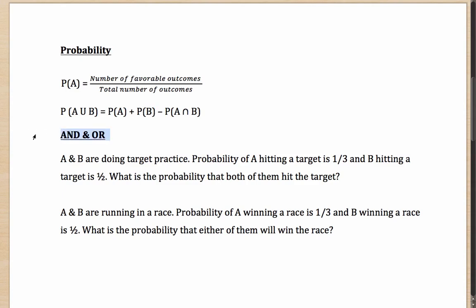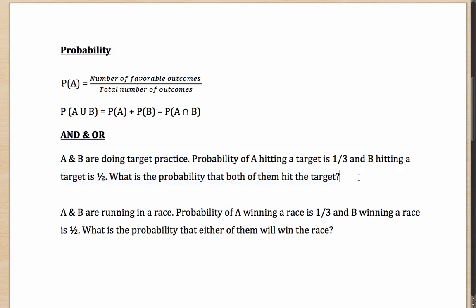Let us look at an example to understand the AND case. A and B are doing target practice. Probability of A hitting a target is 1 by 3 and B hitting a target is half. What is the probability that both of them will hit the target? A hits in one third of the cases; out of those one third, B will hit in half of them. So overall, they will hit in one by six of the cases — which is simply the multiplication of the two values.